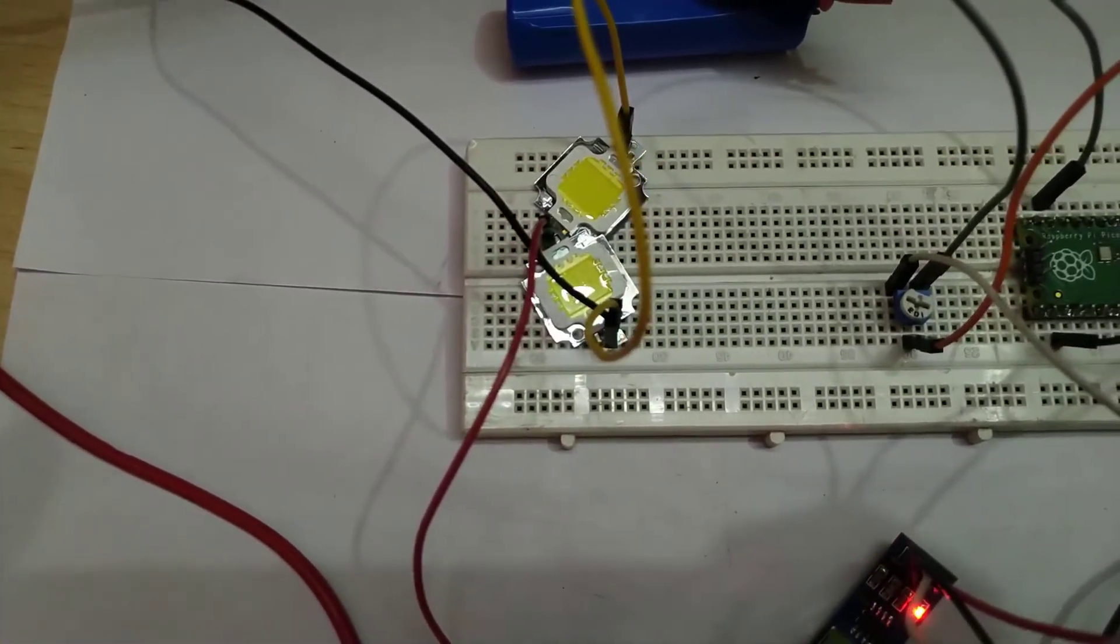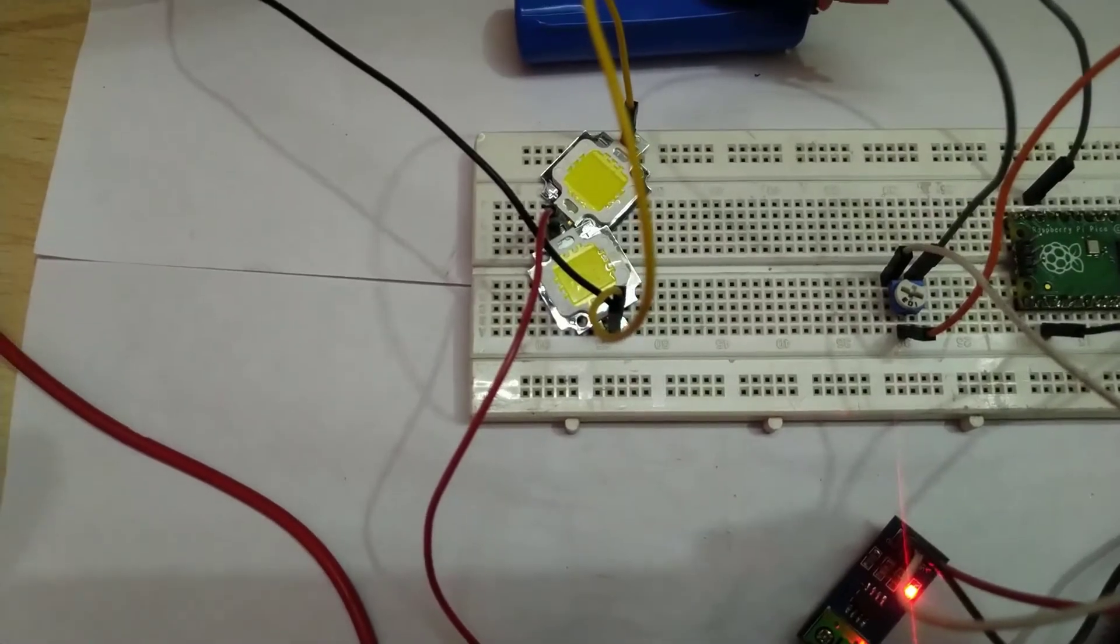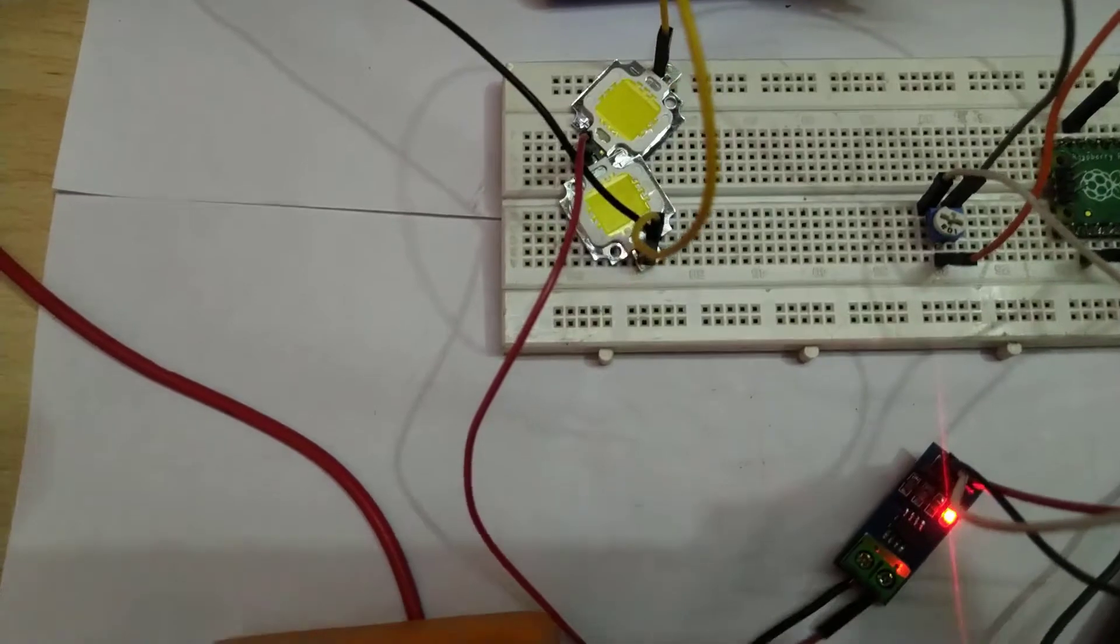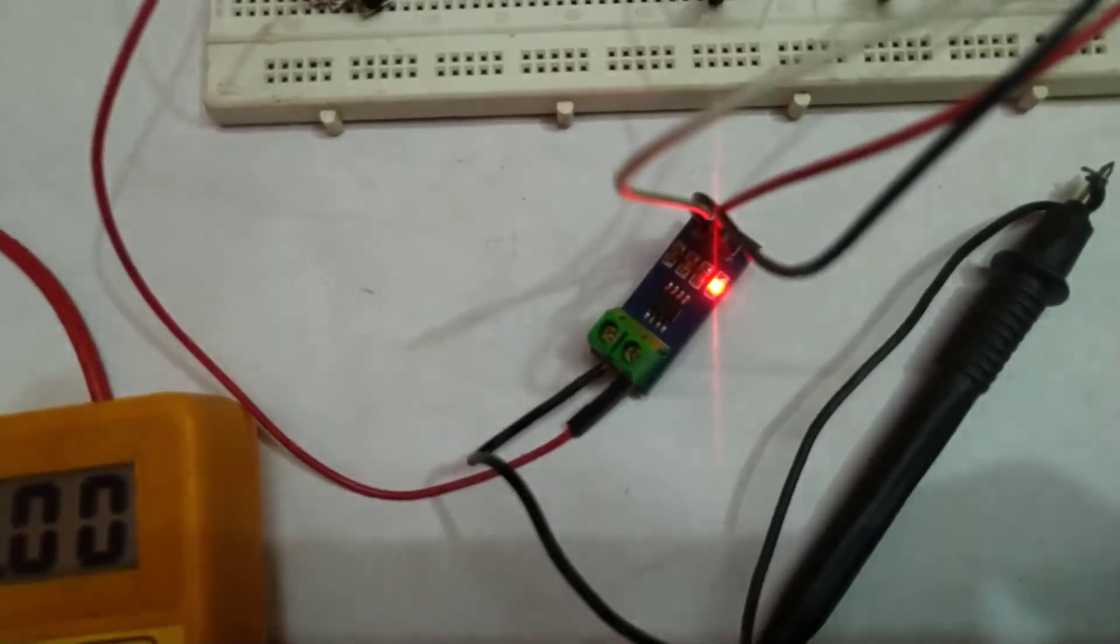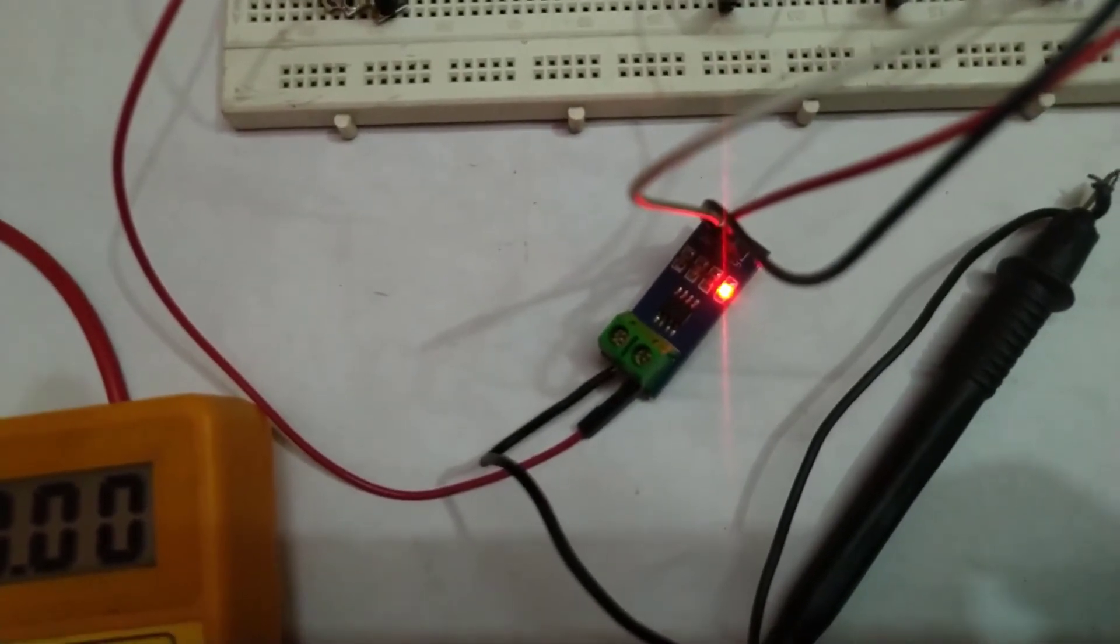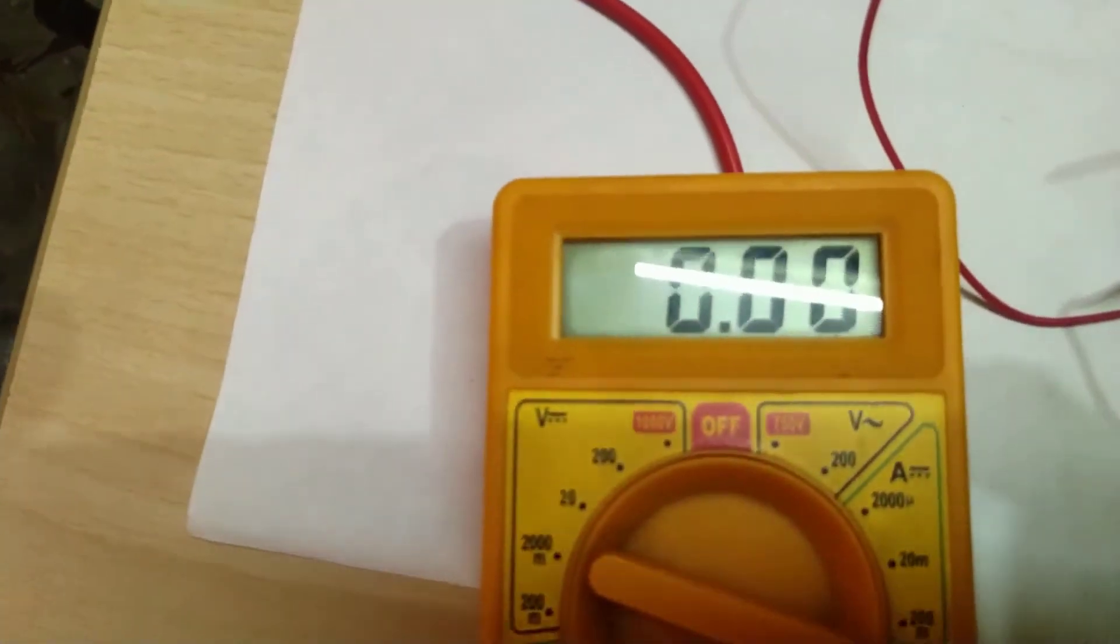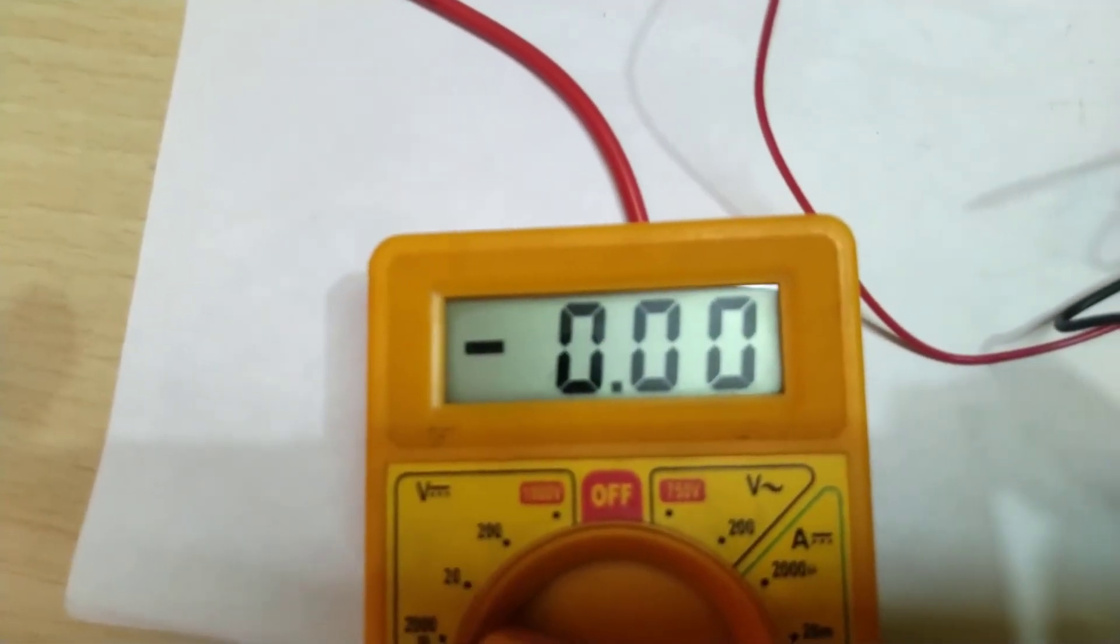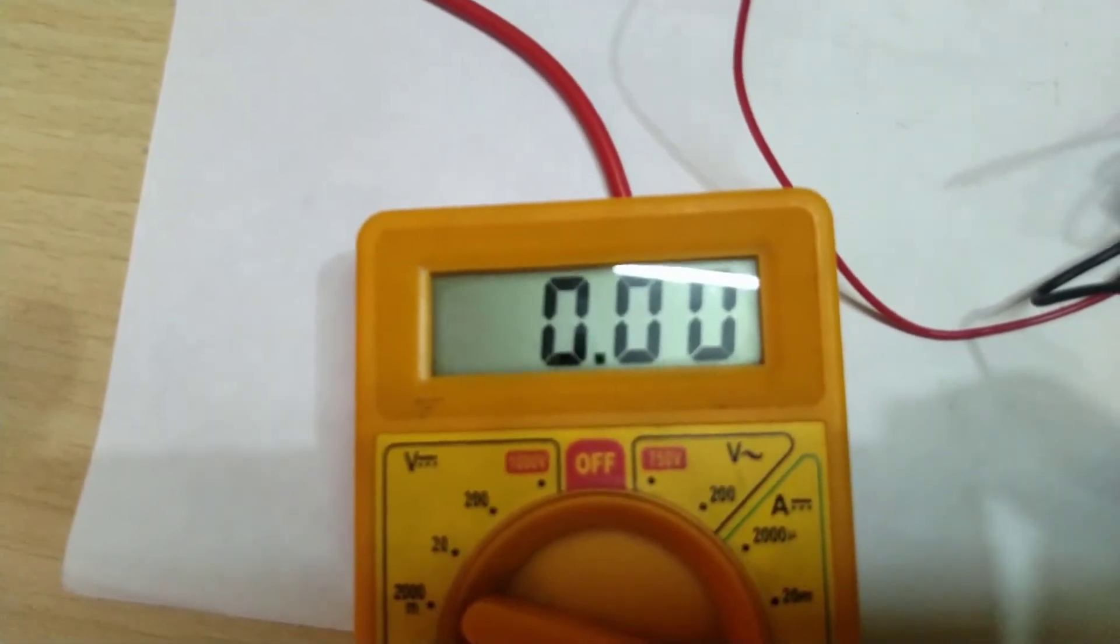high watt LEDs each consuming 5 watts of power at 12 volts DC and here you can see I have attached this ACS712 module in series with this multimeter configured as an ammeter that is capable of measuring current.